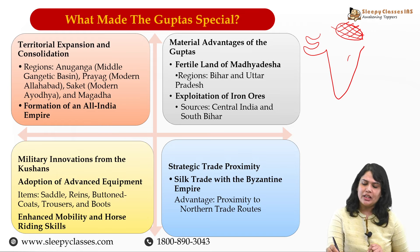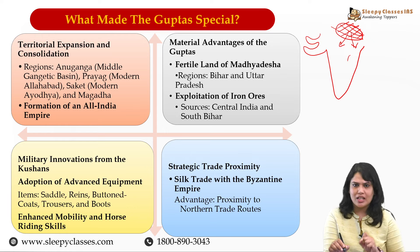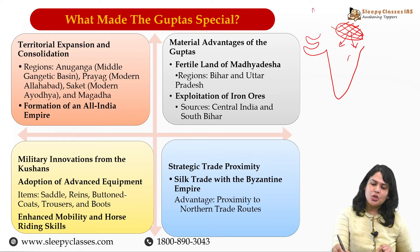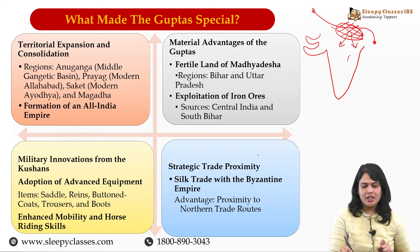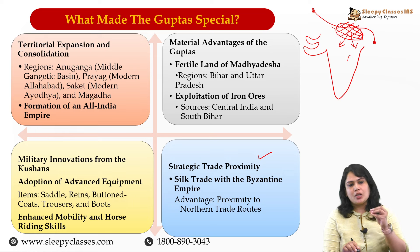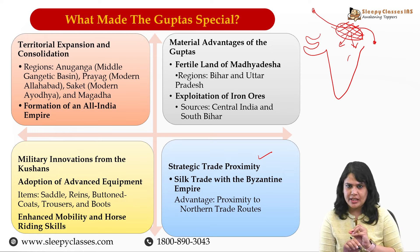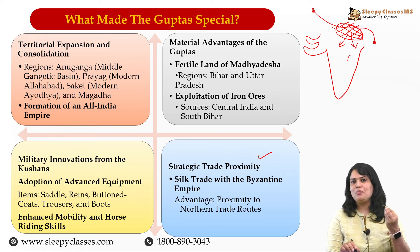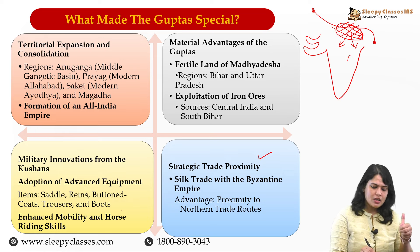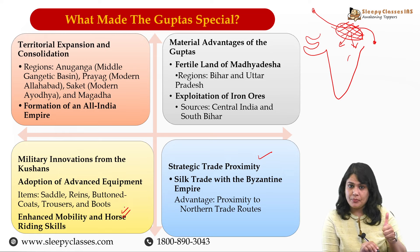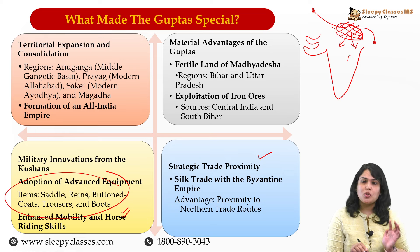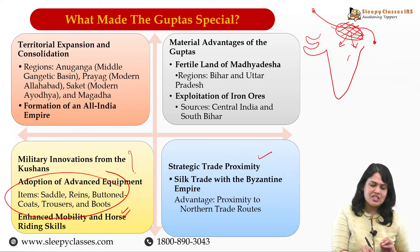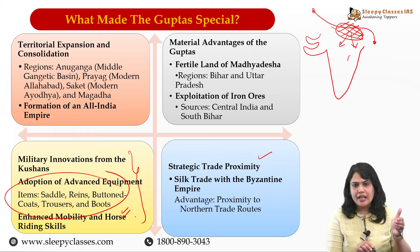Apart from that, in the position of central India, the iron ores are easily accessible. And the Guptas also adopted the usage of iron - saddle, reins, buttoned coats, trousers - in-sab ko bhi adopted. Apart from that, there is a military advantage vis-à-vis the other emerging powers.